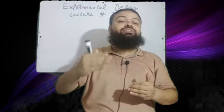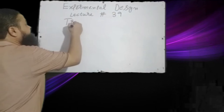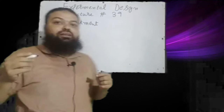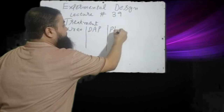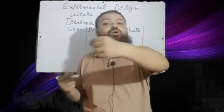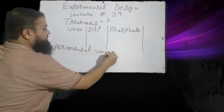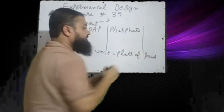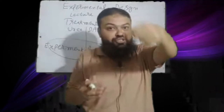Experimental design is a plan to get the effect of the treatment on the experimental unit. First, I will tell you what is treatment and what is experimental unit. Treatment — for example, we have urea, DAP, and phosphate; these are three treatments. We want to check their effect on the plot of land, which is the experimental unit.